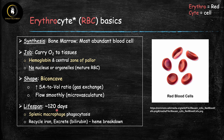Their lifespan is about three to four months. They end up getting destroyed in the spleen and phagocytosed by macrophages and essentially broken down for parts. The iron from the heme gets recycled back to the bone marrow for synthesis of more red blood cells, and the bilirubin gets excreted through bile.